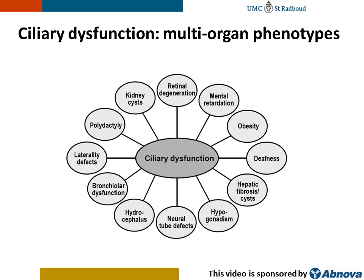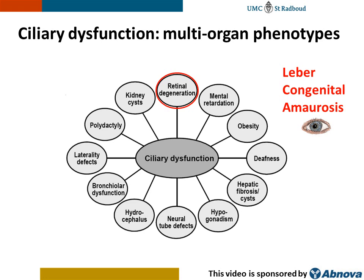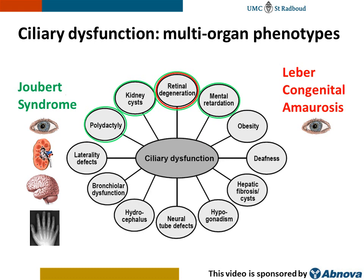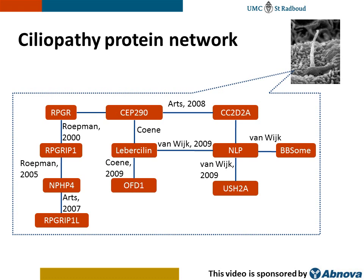In some ciliopathies, only one organ system is affected, such as for Leber congenital amorosis, which only involves blindness. While for other ciliopathies, a full-blown ciliary phenotype can be observed, as for Joubert's syndrome, in which, apart from eye problems, also kidney and brain problems and the presence of extra digits can be observed.